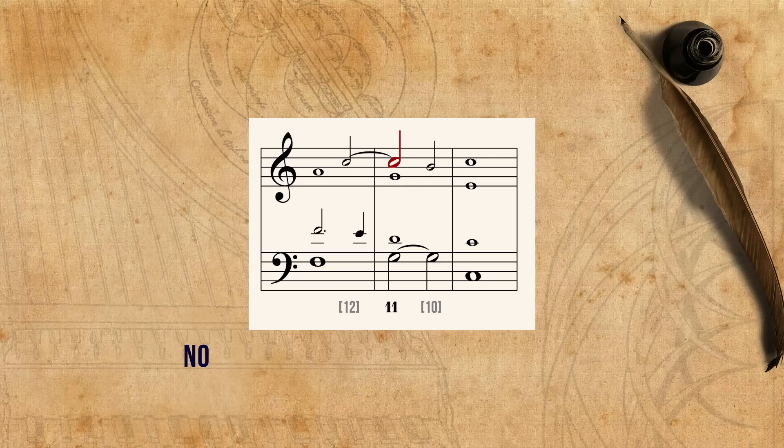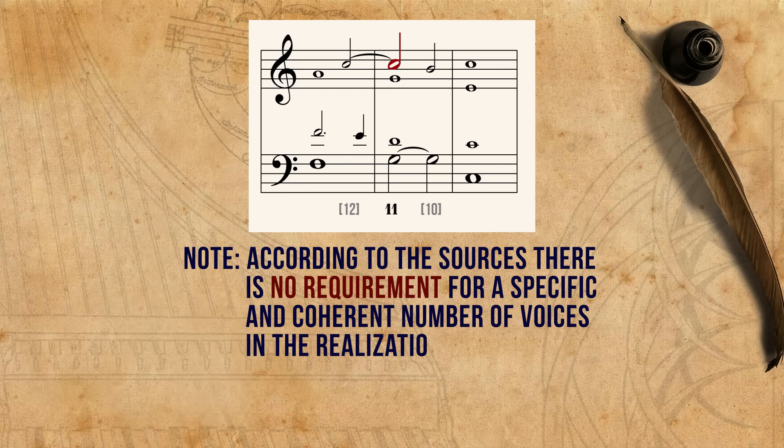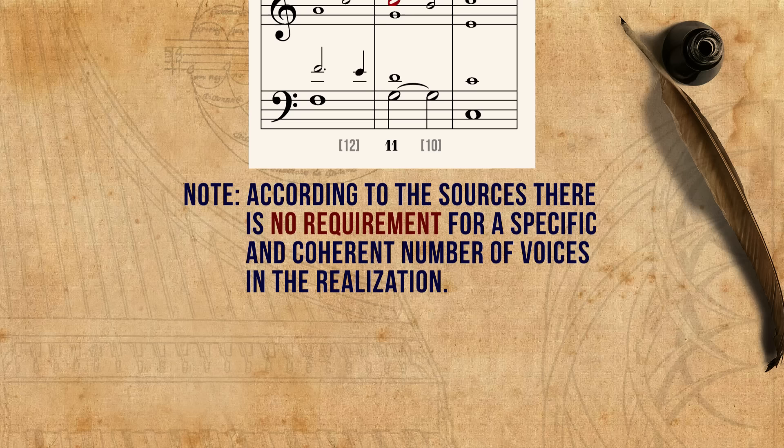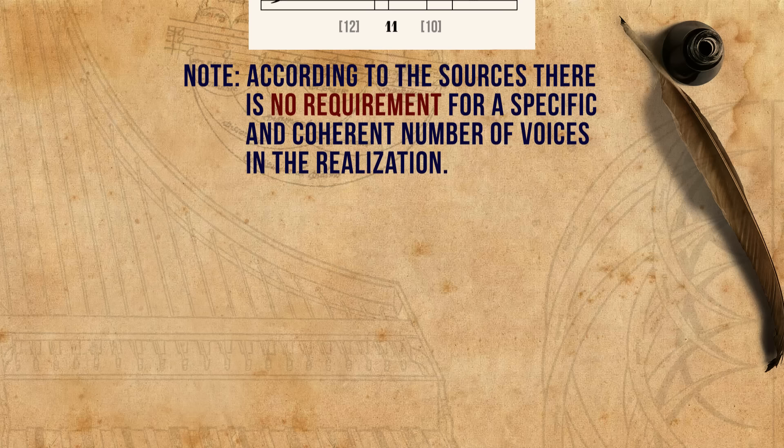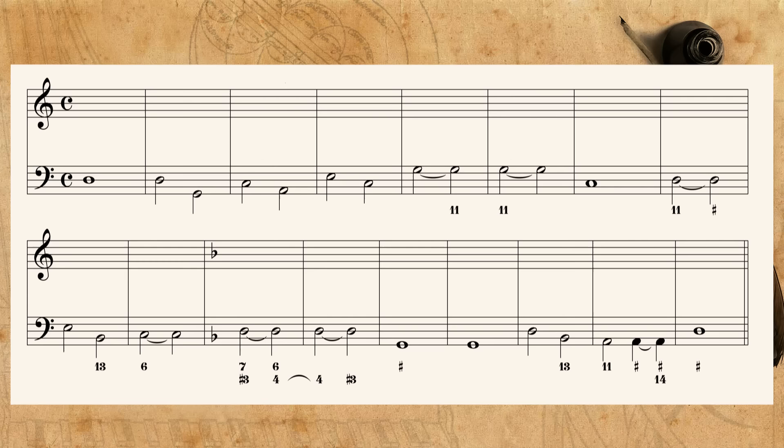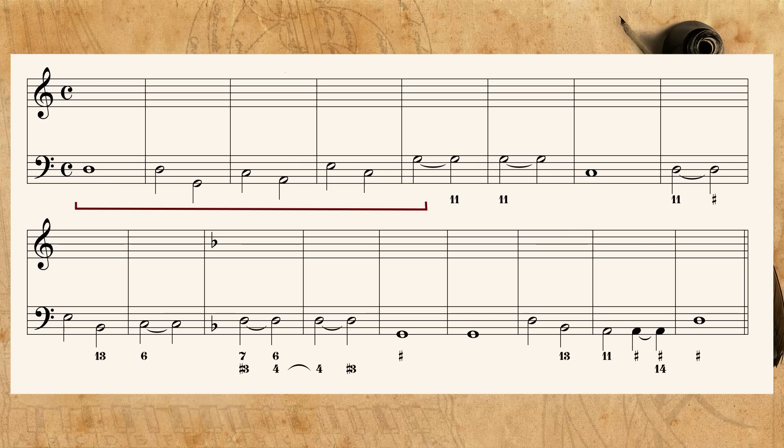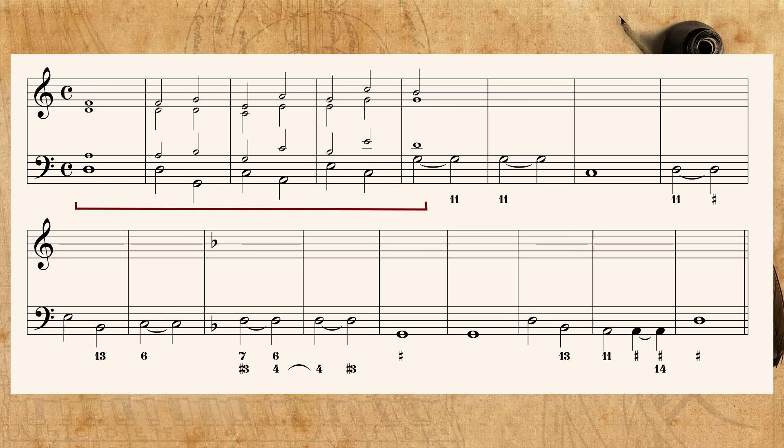Note, according to the sources, there is no requirement for a specific and coherent number of voices in the realization. This can be different and varied. Also, all the realizations shown in this episode are one possible option out of several, and are not meant necessarily as the most correct one. Here is a larger, generic example of Cavalieri's notation. In the beginning there are no figures, so consonances of thirds, fifths and octaves should be used freely. Here I used contrary motion, as it helps to avoid parallels.